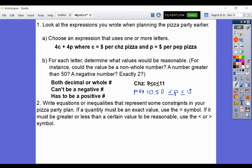Write equations or inequalities represent some constraints in your pizza party plan. If a quantity must be an exact value, use the equal symbol. If it must be greater or less than. So again, we just kind of talked about that right here, our constraints. Here's our constraints on prices. And as you can see, we put that variable in the middle to tell us what our high can be and what our low can be. So our low here was $10.50. Our high here could be $13. So that is our first lesson.